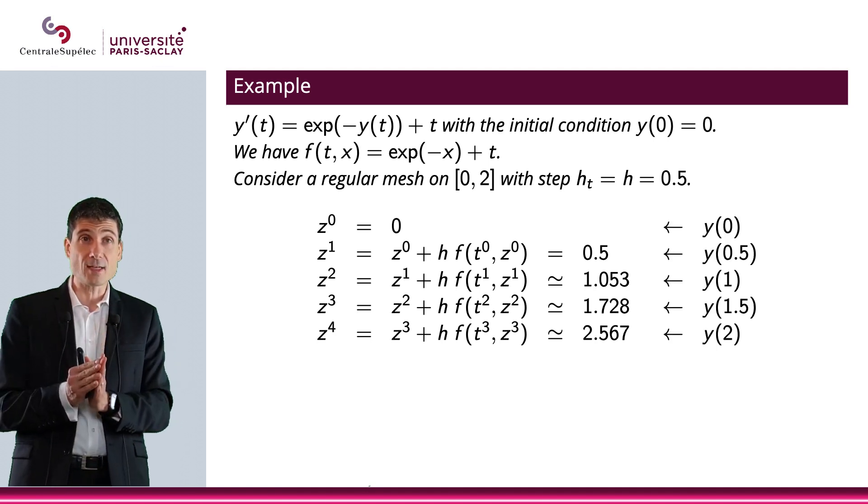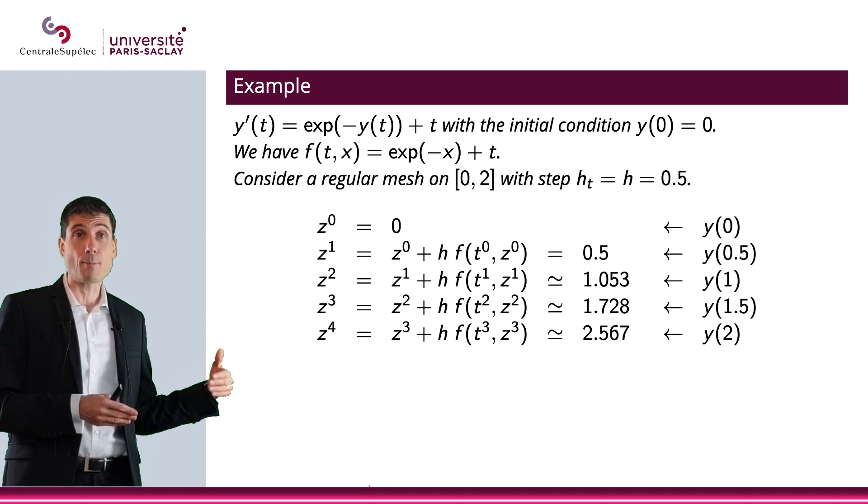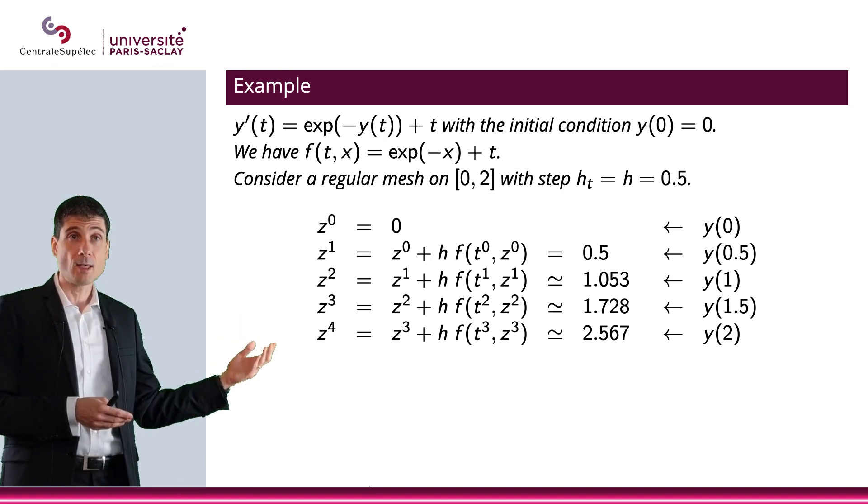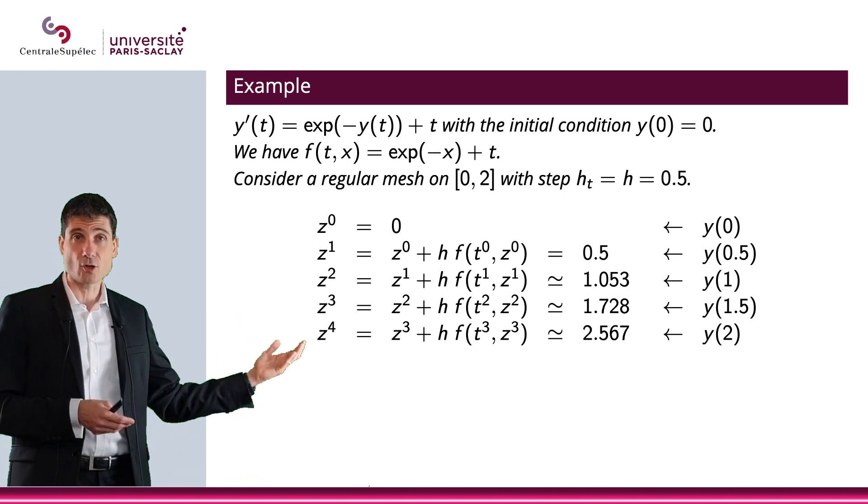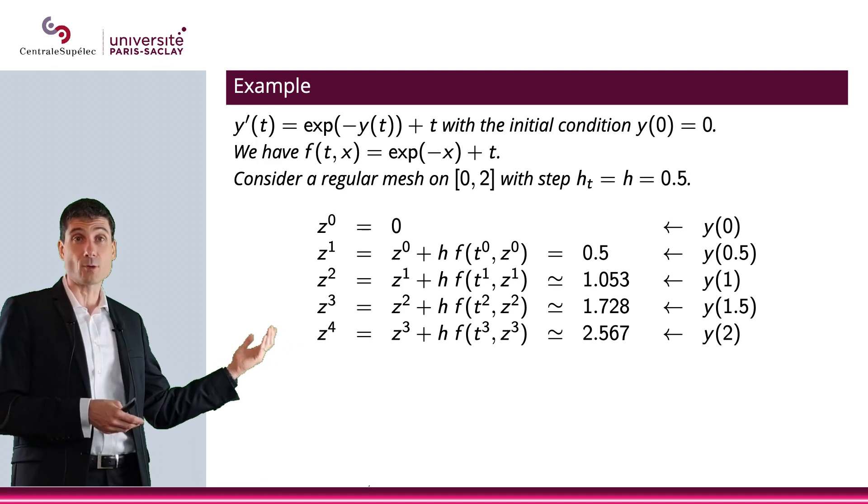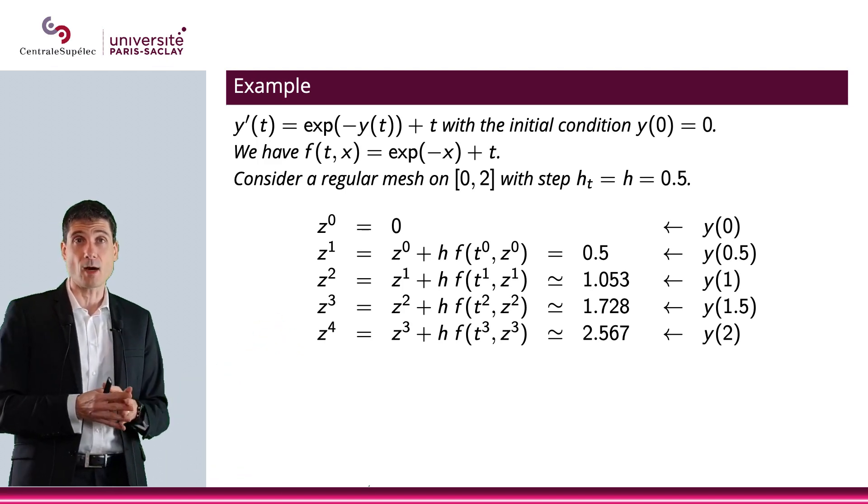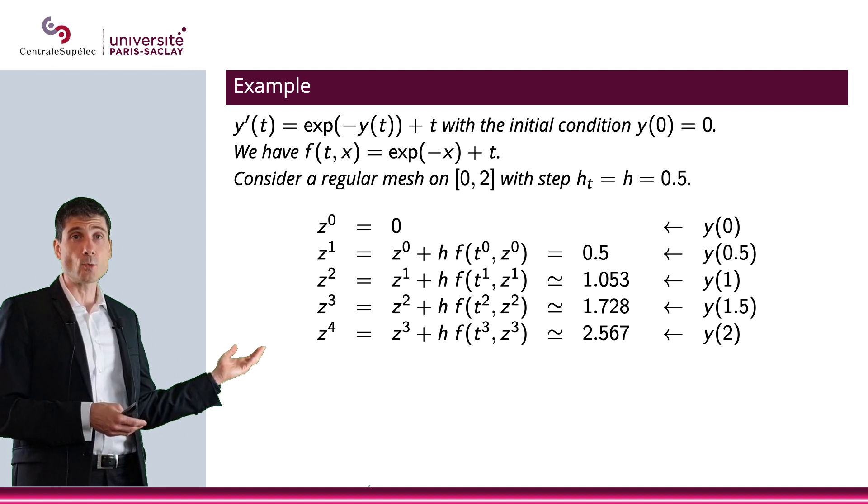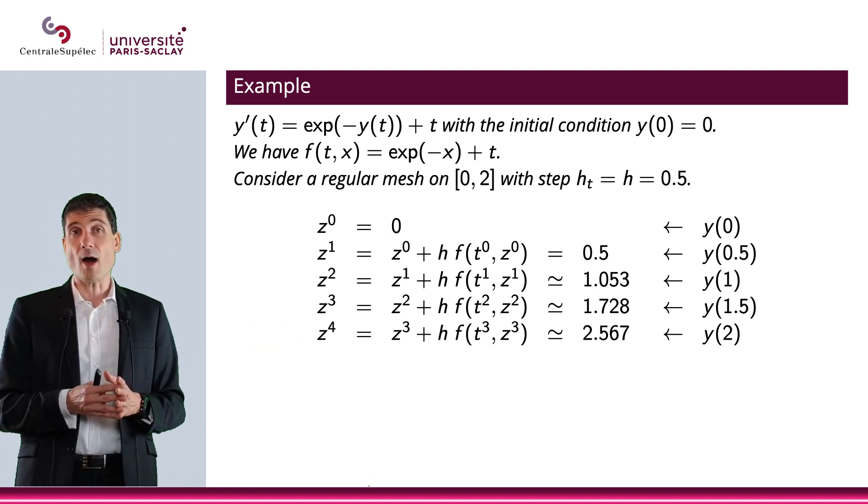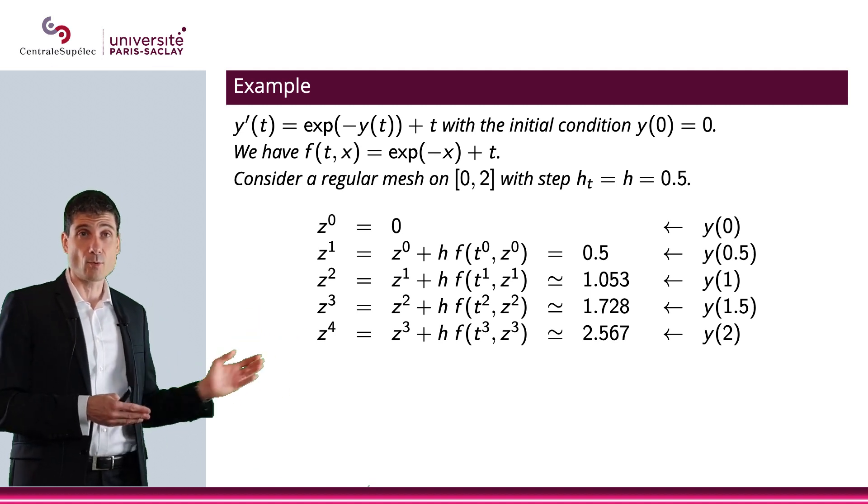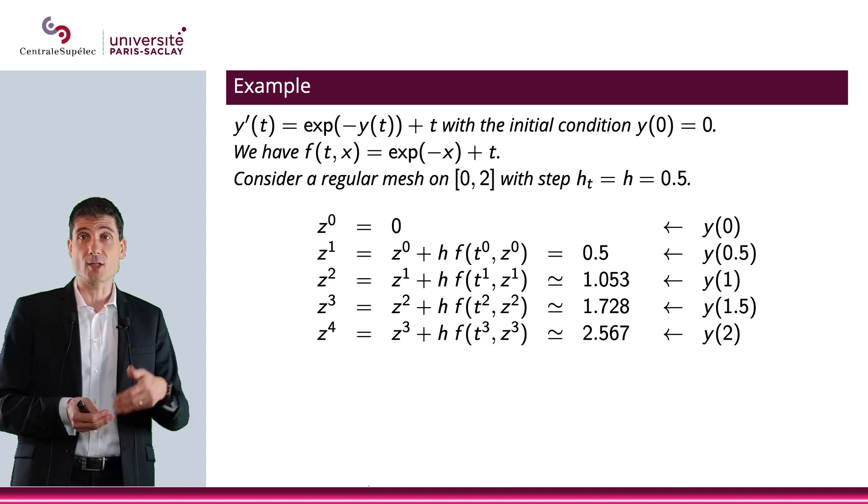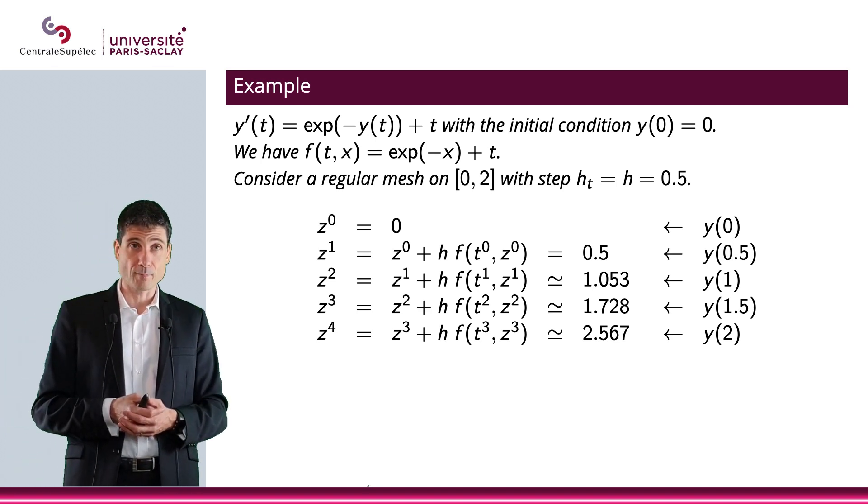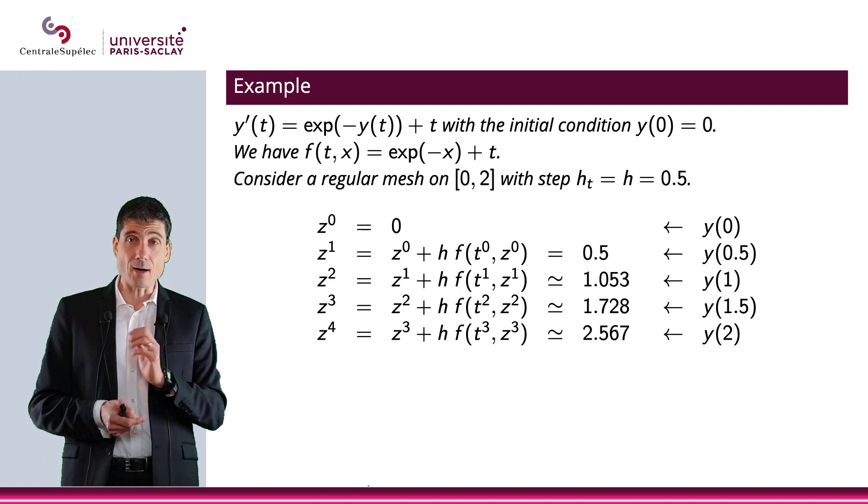Now, what you have is that z0 is an approximation of y0. z1 is an approximation of y of 0.5. z2 is an approximation of y1. And then we keep going until z4, which is an approximation of y2.